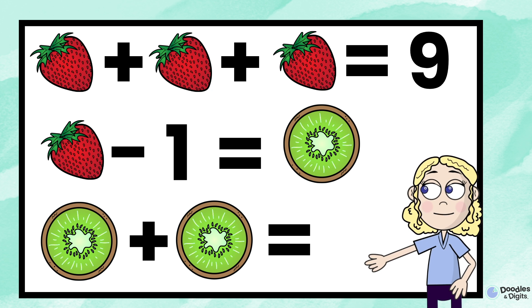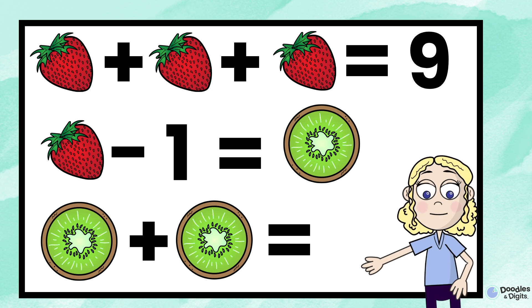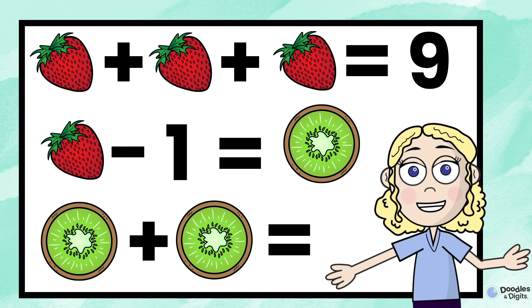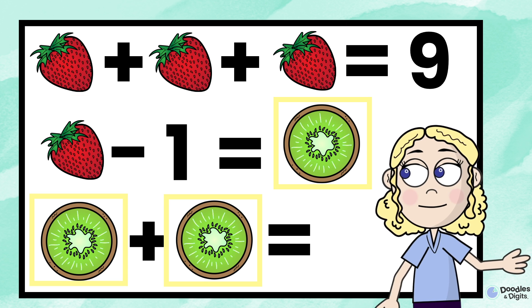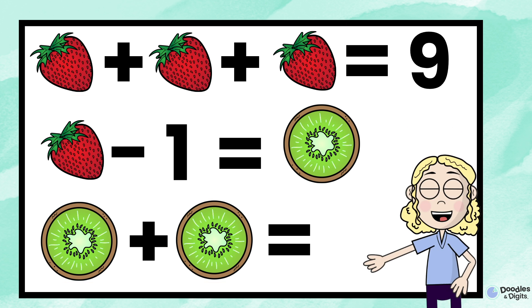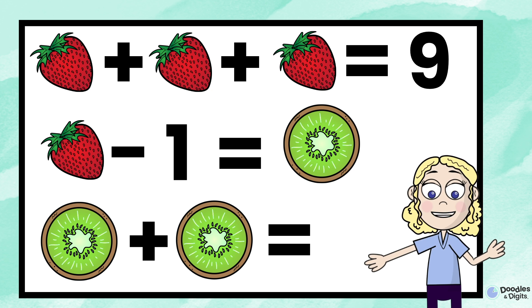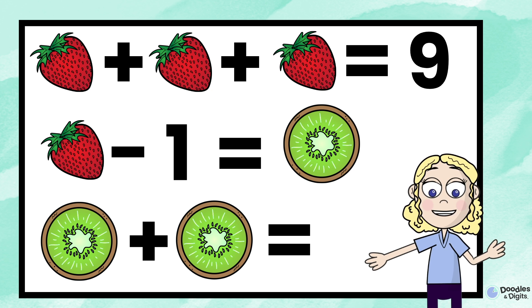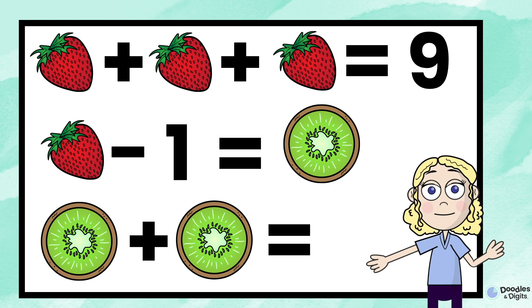Our goal is to figure out what each picture represents. Today, we're going to be looking at these strawberries and these kiwis. I love these puzzles because you can actually solve these in a couple of different ways. How you solve it might be different than the next person or another person across the room.